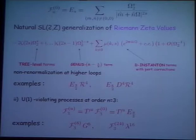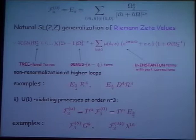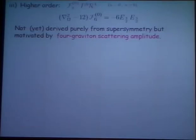And the modular forms there are simply given by acting U times with a covariant derivative on the Eisenstein series E_{5/2}. So those are the simplest examples.